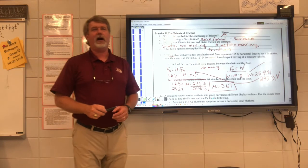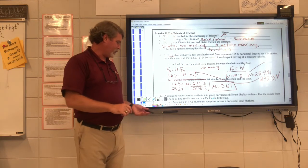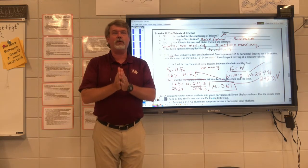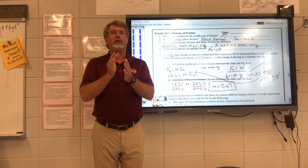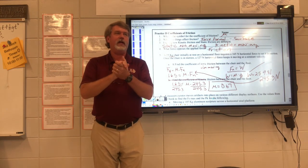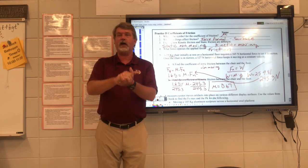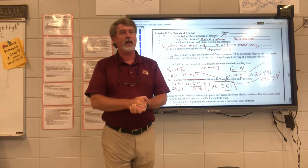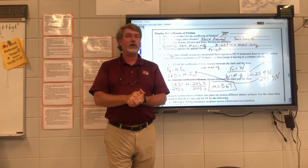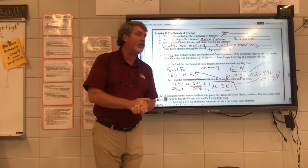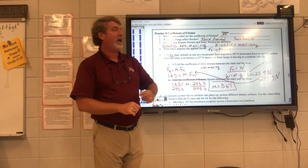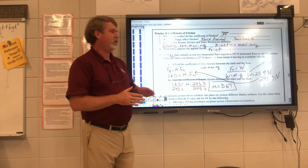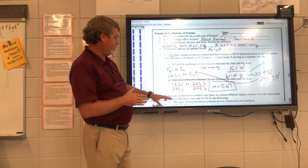Force of friction is dependent on two things: the surface area and surface type, called the coefficient of friction, given by the symbol mu. The other thing it's dependent on is force normal, which depends on the weight and varies across different scenarios. You should now be able to solve parts A and B and so forth.